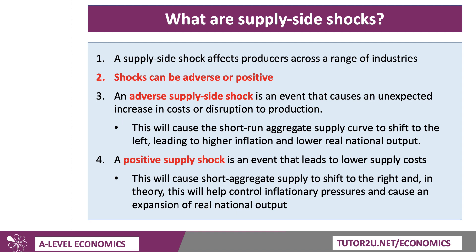However, we can also have positive supply-side shocks. These cause lower supply costs, causing aggregate supply in the short run to shift to the right — an outward shift — and this helps to reduce inflation and causes an expansion of real GDP.